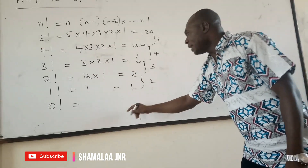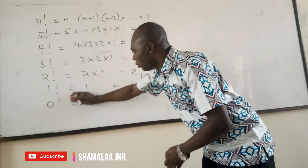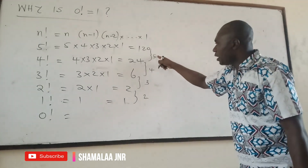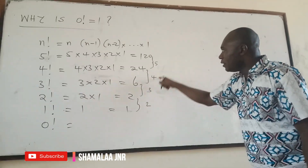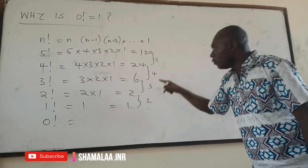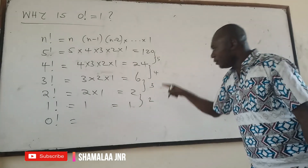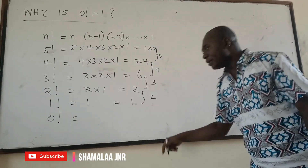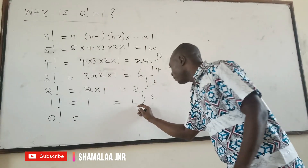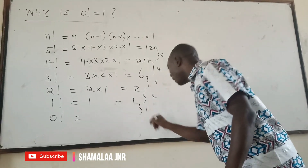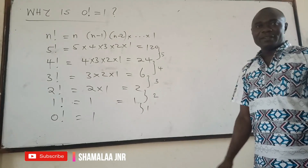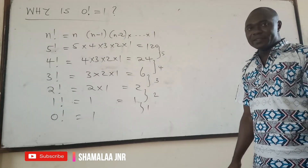Divide 1 by 1. So, to get the answer to the next factorial, which is 0 factorial, you have to divide by 1. Because you divided 120 by 5, then 24 by 4, then 6 by 3, then 2 by 2. So you have to divide this 1 by 1. That's the next step. So you divide 1 by 1, and when you divide 1 by 1, you are going to get 1.